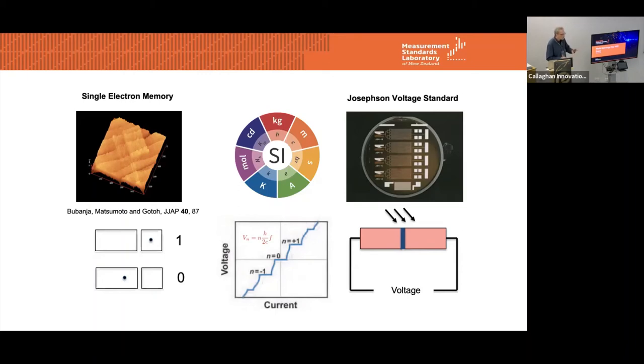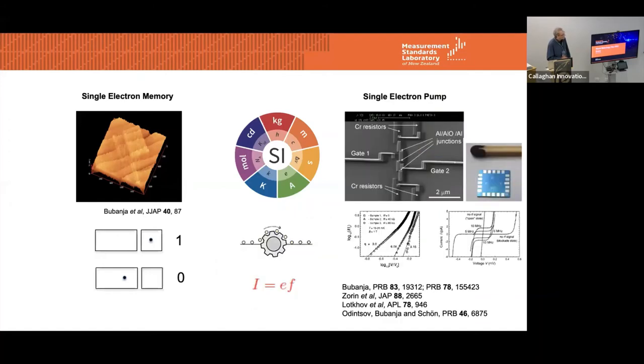Output from a single Josephson junction is in a millivolt range. To increase this, one produces arrays of serial connection of Josephson junctions of thousands of them. Nowadays, there are chips with hundreds of thousands of these junctions, and this is a typical chip layout. MSL has several of these. Originally, Laurie Christian introduced this standard and worked on providing voltage standard, primary voltage standard for New Zealand. And now there's also a team with Lawson working on that.